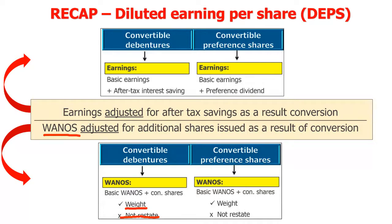Let's look at convertible preference shares. When calculating diluted earnings per share with convertible preference shares, we start with basic earnings and add back the preference dividends — just the preference dividends, not the after-tax effect. We don't want the after-tax effect of preference dividends because dividends and preference dividends are equity items and are not subjected to normal corporate tax. For the diluted WANOS, we only weight if the convertible preference shares were issued or converted in the current or prior year under review, and we never restate these amounts. Restatement is reserved for basic earnings per share in our course.